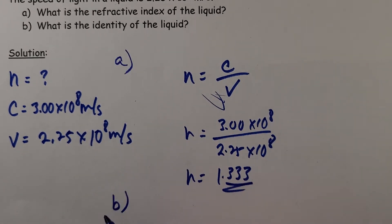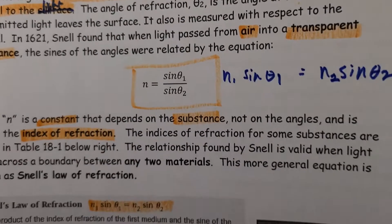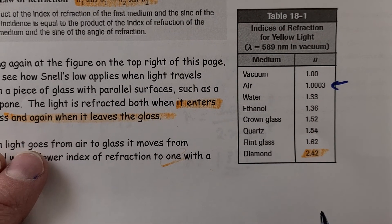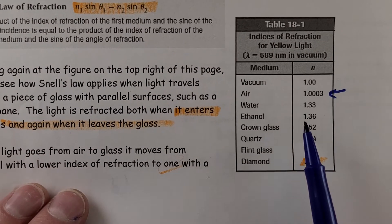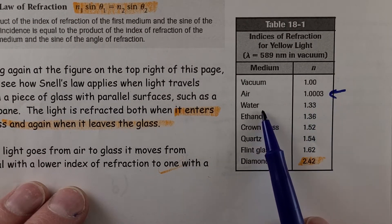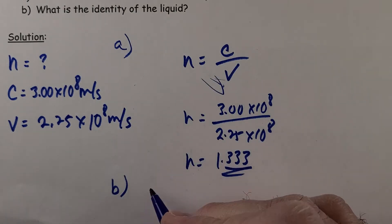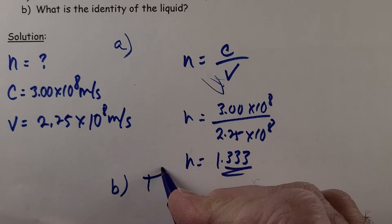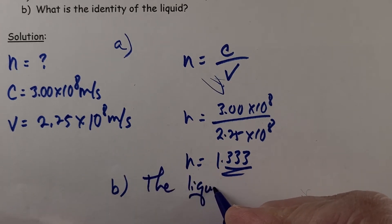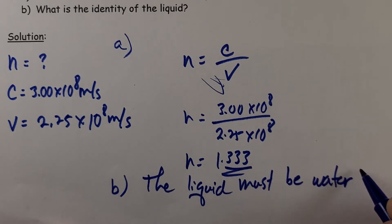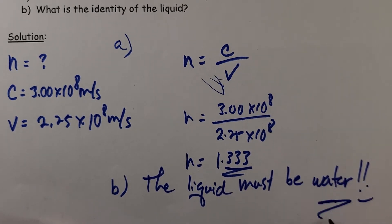Part B, find the identity. So if we just happen to have a table that has index of refractive indices, 1.33, there it is right there. Water. So therefore, the liquid must be water. Easy peasy.